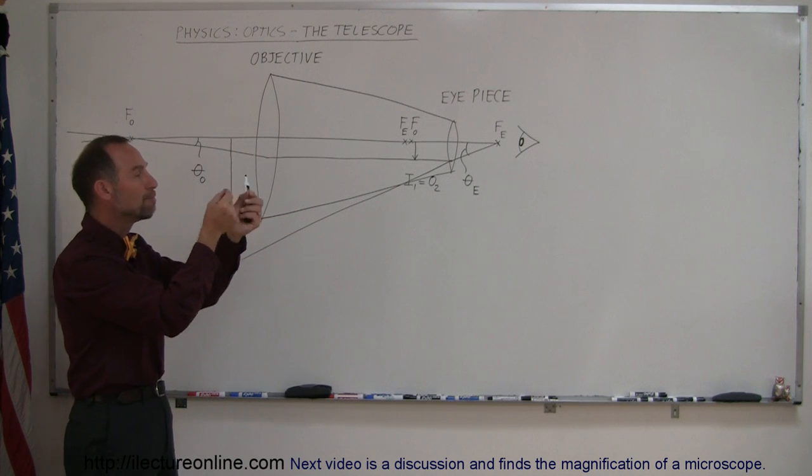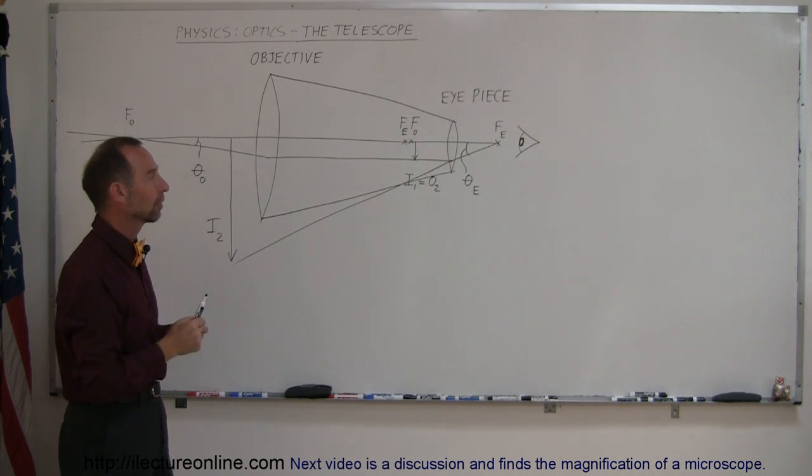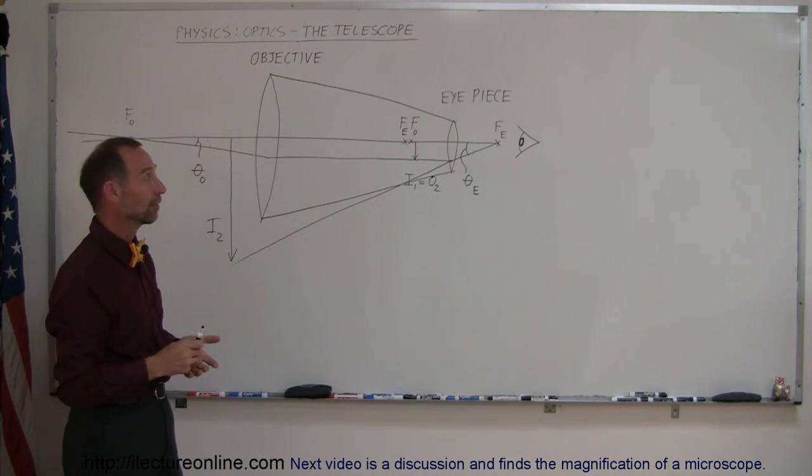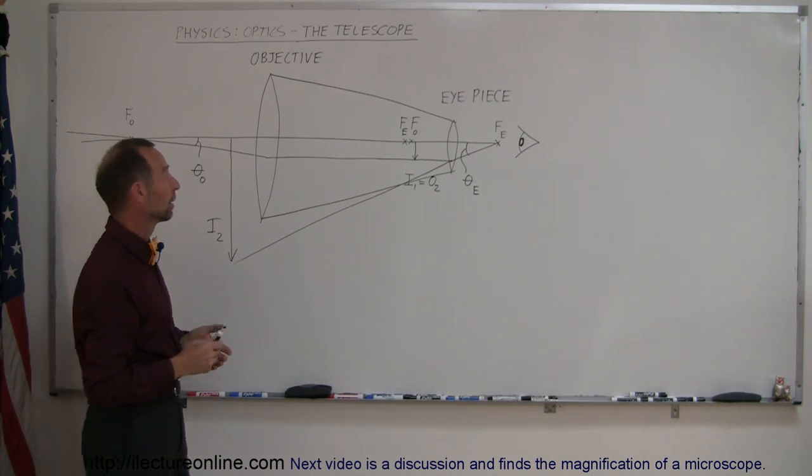Those two focal points must be overlapped. Once they are, then you have yourself a telescope.